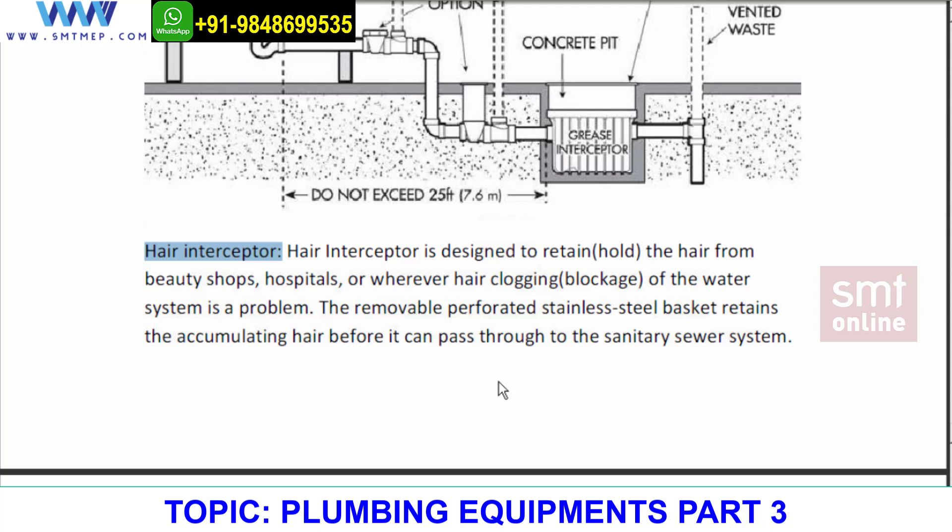Some hairs will enter into the drain line, and after repeated occurrence this might clog or block the line over time. To avoid this, we have a hair interceptor which is just here to separate the hairs so that only water passes through.